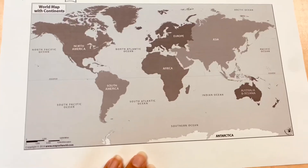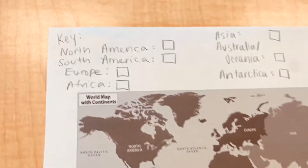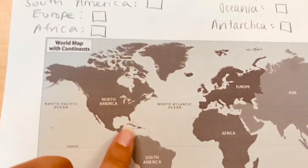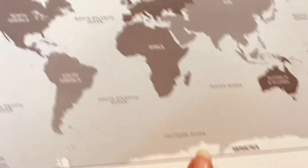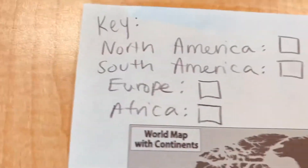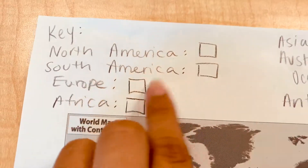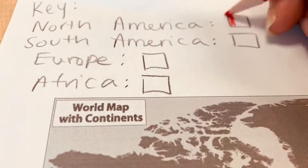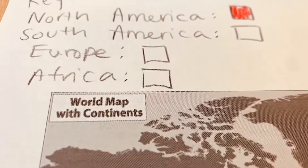I have a map that has the continents labeled, and then I went ahead and made a key — I wrote down all the continents and drew a little box next to each of them so I could color code them. Here I'm showing you just how I'm going to color code them.